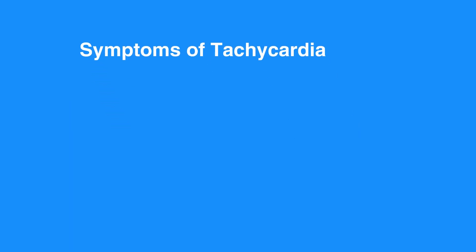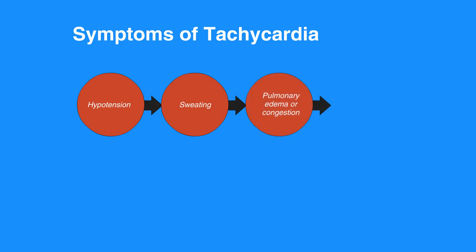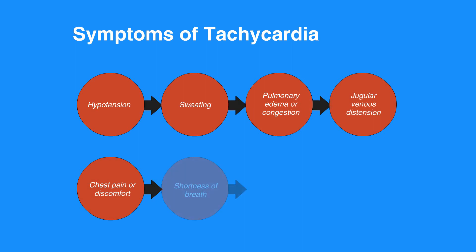Symptoms of tachycardia include hypotension, sweating, pulmonary edema or congestion, jugular venous distension, chest pain or discomfort, shortness of breath, weakness, dizziness or lightheadedness, and altered mental state.